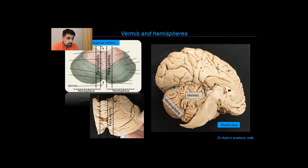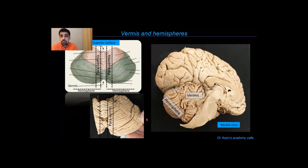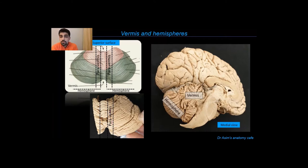Looking at the cerebellum from its superior aspect, you can see a central constricted part in the middle known as the vermis, with the two lateral extensions — the cerebellar hemispheres — one on either side. The cerebellum can be divided sagittally into three zones: the vermis centrally, then the paravermis (also called pars intermedius), which is the proximal part of the cerebellar hemisphere in close proximity to the vermis.